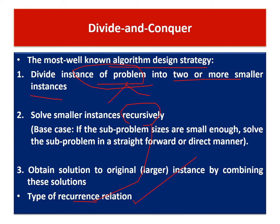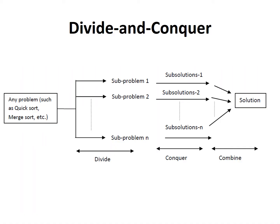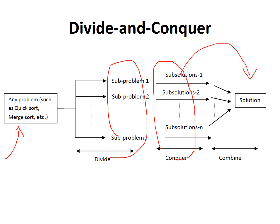That is the idea behind divide and conquer. To graphically represent it, we generally use sorting algorithms — for example, quicksort and merge sort. We divide into sub-problems, conquer by getting solutions to the sub-problems, and combine the sub-solutions to get the final solution. The key is dividing into equal-size sub-problems and recursively doing this until you reach a base case.